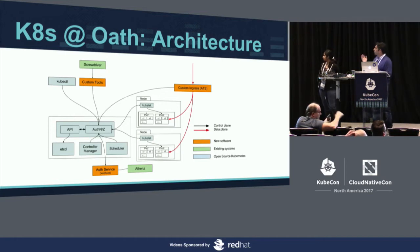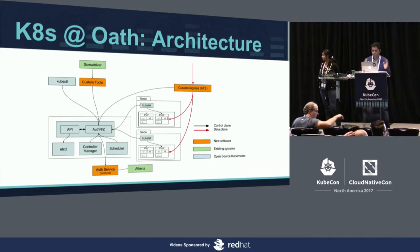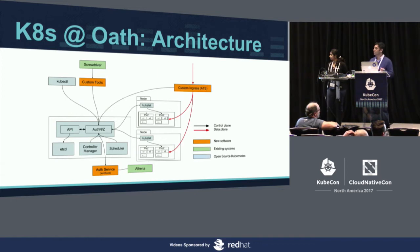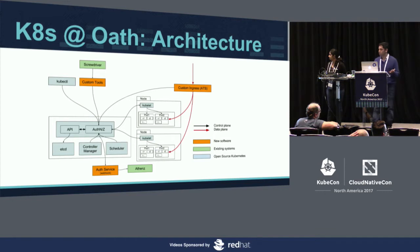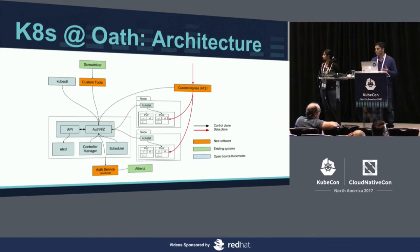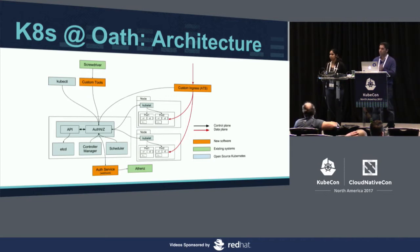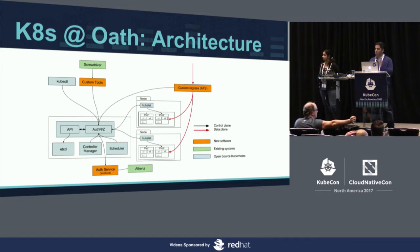If you look at the left-hand side, all the boxes marked yellow are the components which we built in-house, and those which are green are existing components within Oath which we reused. Other things come from the Kubernetes open source world. There are custom tools — something which we built into our Screwdriver continuous delivery pipeline — so that users can deploy their code natively using kubectl apply on their YAML to different environments.